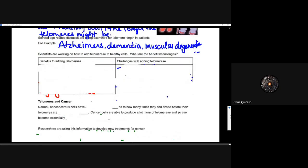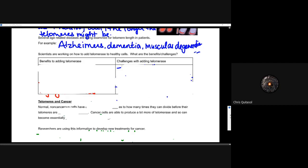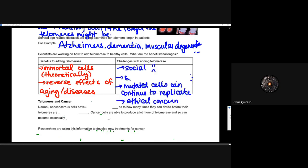Scientists are working on how to add telomerase to healthy cells in an attempt to increase the life, essentially, of people with longer telomeres. That again, that's that theory, that idea of having longer telomeres leads to longer life. This will lead to immortal cells, theoretically, and it will, in fact, reverse effects of aging and diseases that you see as people tend to age. Now, this does not come without challenges. A lot of issues arise as a result of it.